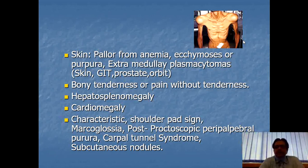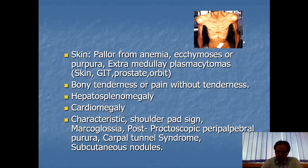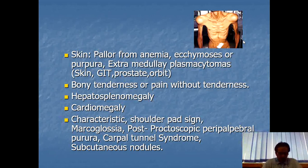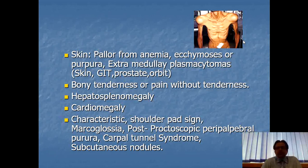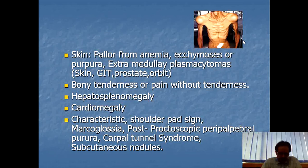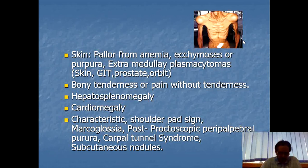Continuing the signs: the patient may have pallor due to anemia, ecchymosis or purpura, and extra-medullary plasmacytomas. Plasmacytomas may be found in the skin, GIT, prostate, and orbit. Plasmacytomas are tumors of the plasma cells forming discrete masses in the skeleton or soft tissue. Sometimes the only presentation of the patient is plasmacytomas — a collection of discrete plasma cells found in bones or soft tissue.